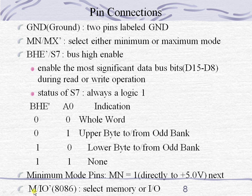Inside minimum mode we have the M/IO bar pin. If this pin is programmed to 0, the processor is performing an operation with an input-output device. If it is programmed to 1, the processor is performing an operation with the memory device.